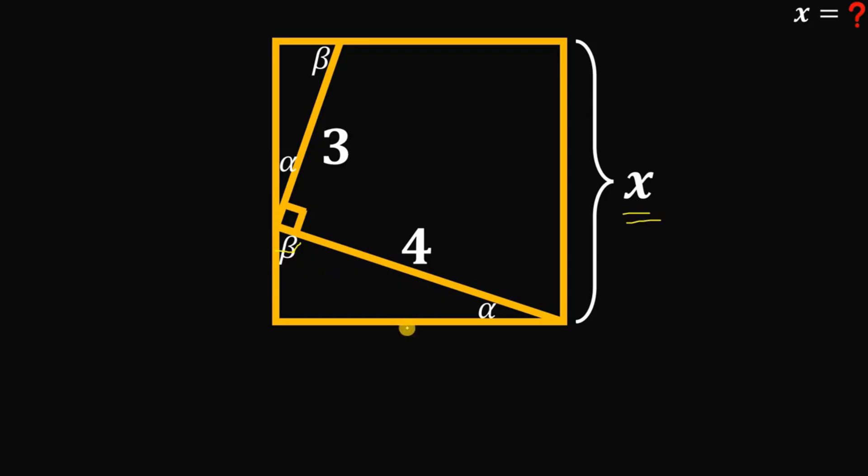Now we know the side of this square is just x. Let's call this segment equal to y. So this segment right over here is just x minus y.